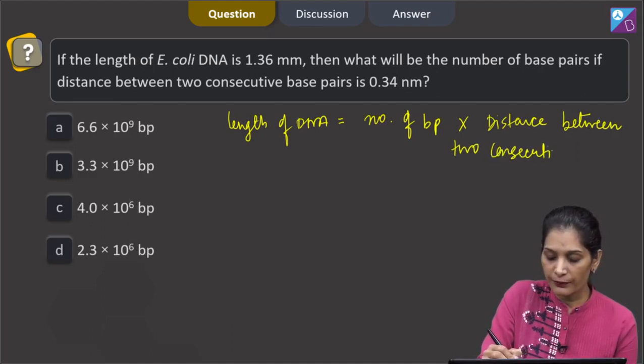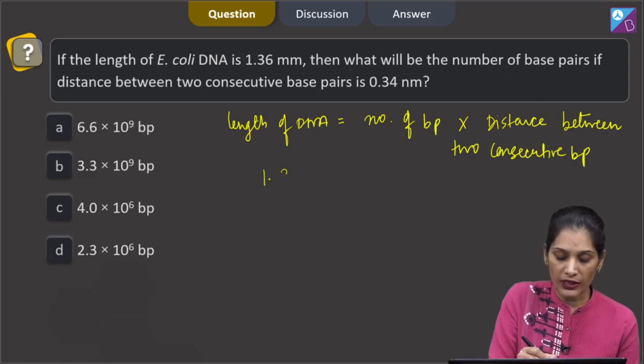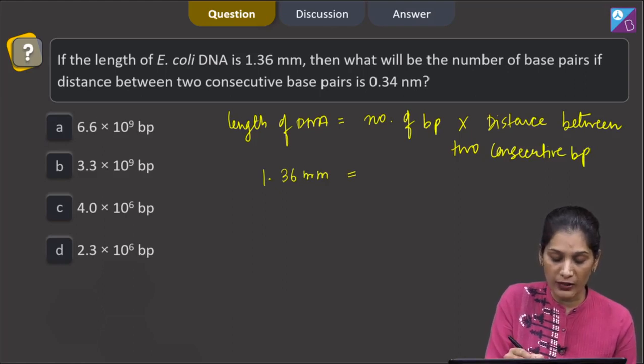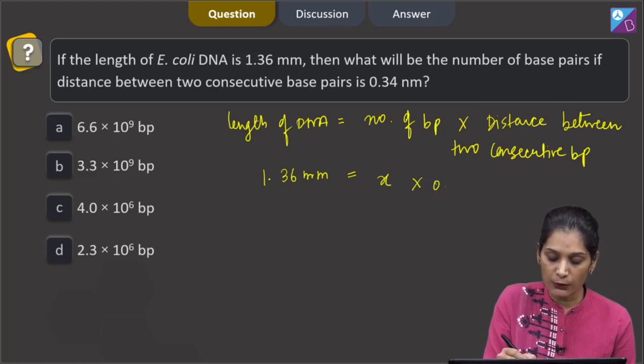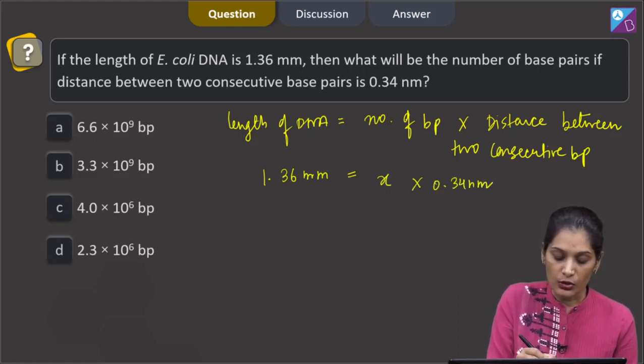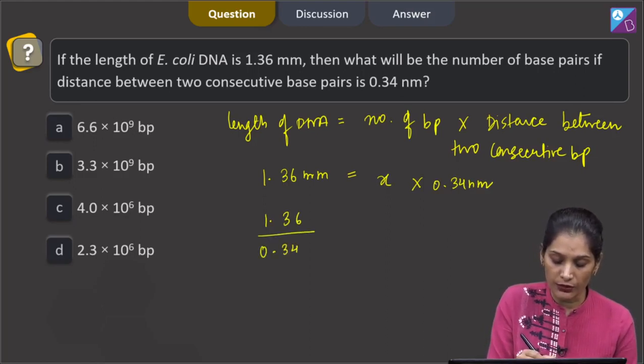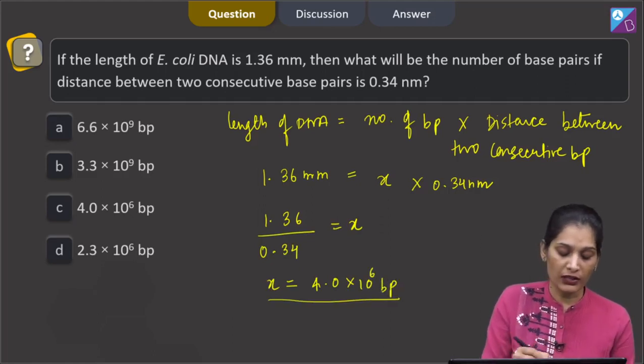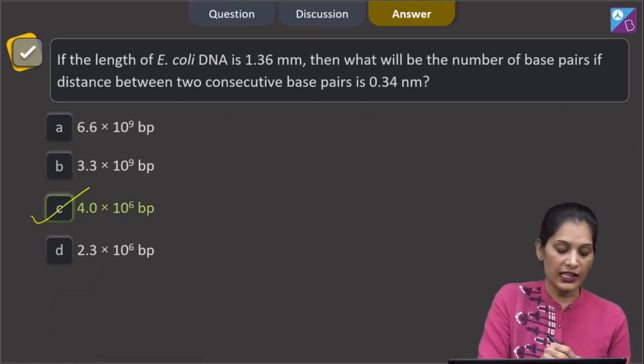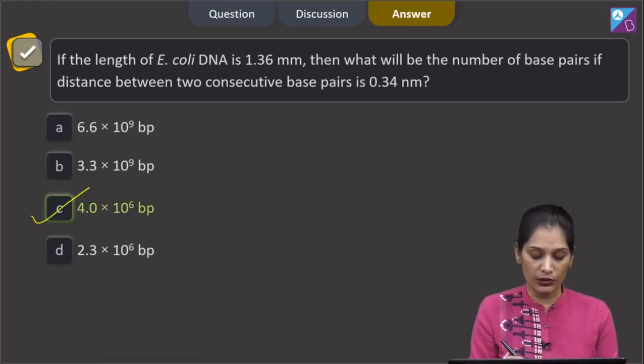two consecutive base pairs. 1.36 mm is equal to, we have to find out the number of base pairs, so we can take it as x, and then distance is 0.34 nanometer. So x can be calculated as 1.36 divided by 0.34 is equal to x, and if you solve, x will be 4.0 into 10 raised to the power 6 base pairs. The correct option for the given question is C.